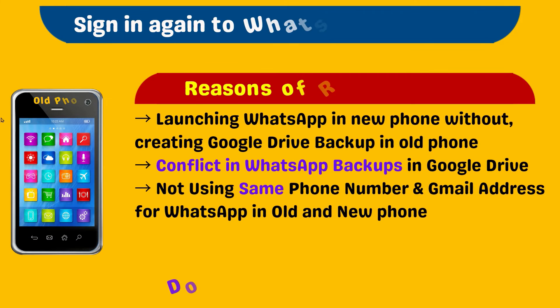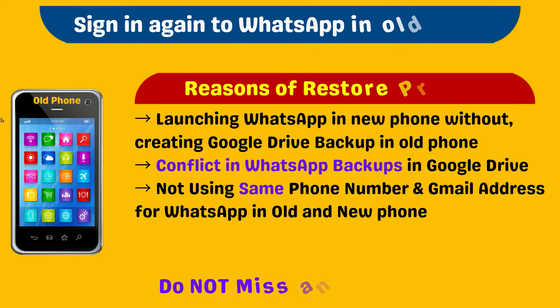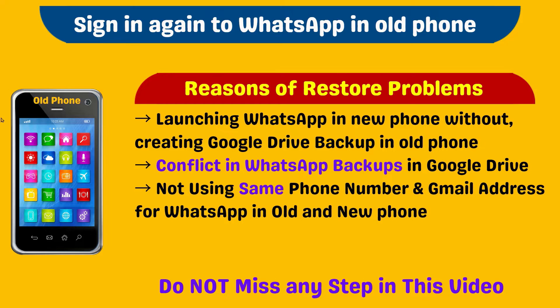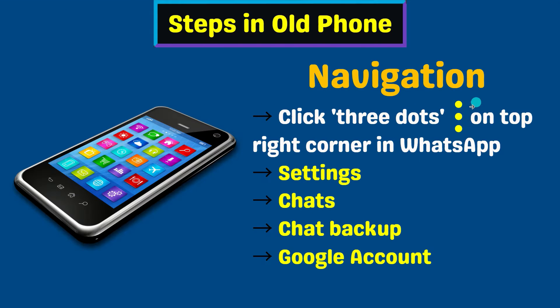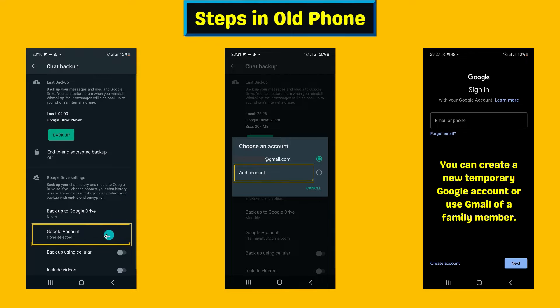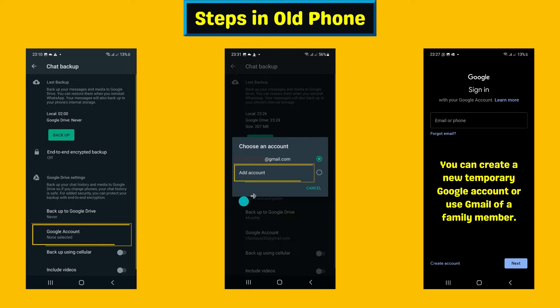Please do not skip any step in this video. Sign in again to WhatsApp in your old phone and follow this navigation in WhatsApp settings. Click on the Google account option in WhatsApp settings and select add account.